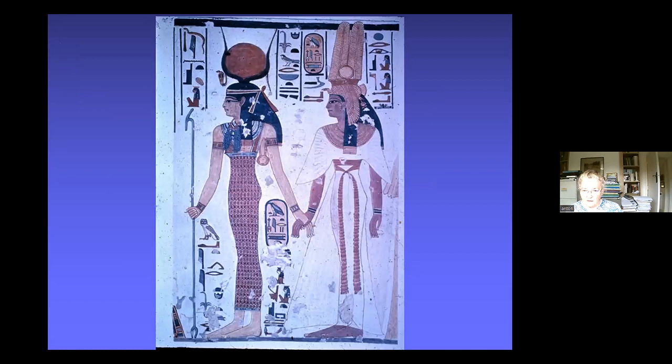Egypt had a predictable climate, the result of the annual flooding of the River Nile, and this predictable climate fed through into the art, because we have a religious art which reflects this stability. So you get a continuity in the type of art produced from around 2800 BC right down to the Greco-Roman period, into the early centuries AD. This is the background to the art we're going to look at today.